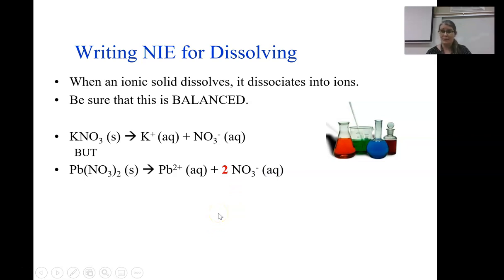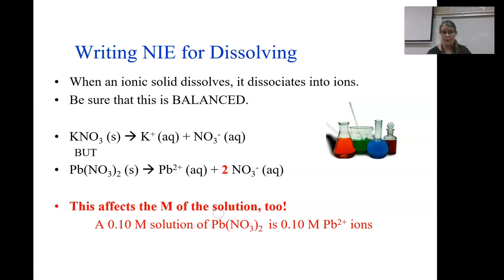And one thing I keep bringing up and people keep making mistakes about is this absolutely does affect the molarity of my solution. If I have a 0.1 molar solution of lead nitrate, it is 0.1 molar lead ions. But because there are two nitrates for every one of these lead nitrate formula units, my molarity is not 0.1 molar for nitrate, it is 0.2 molar for nitrate. I have to pay attention to these stoichiometric ratios.